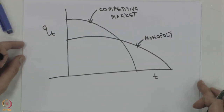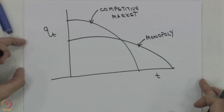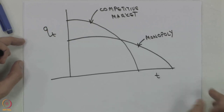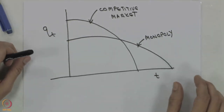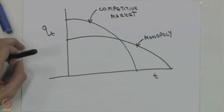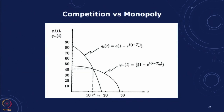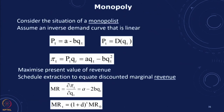You can look at the book by Conrad on resource economics — there is a chapter on non-renewable resource economics which shows some of these results, including a plot from Conrad showing a similar trend for a particular example. Now, taking that expression, just as we did for the competition case, we would like to derive how much time the resource is going to last.